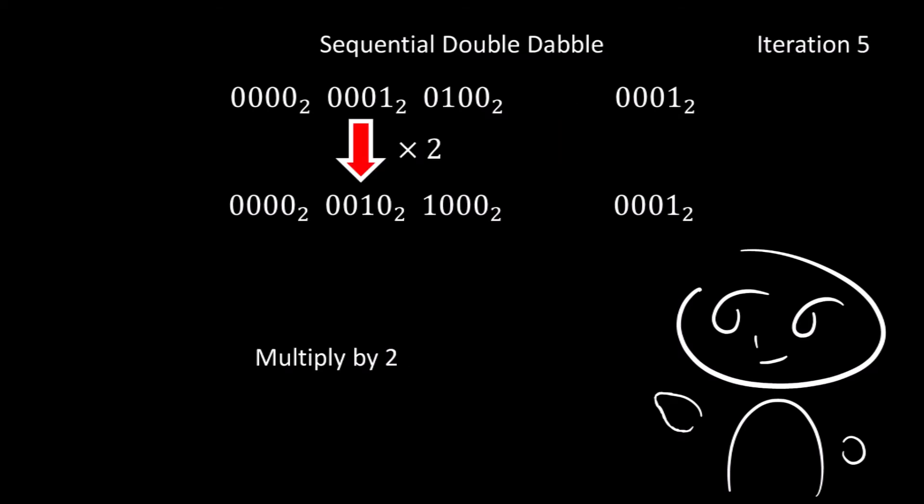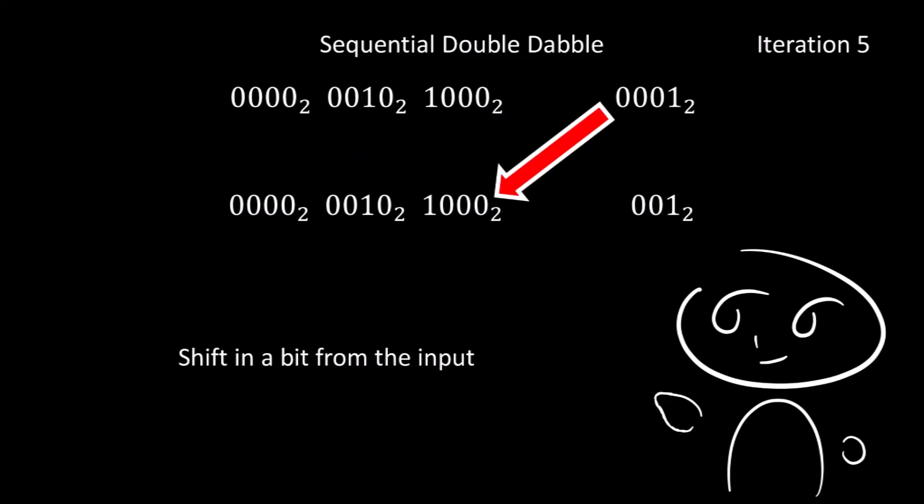For the fifth iteration, we multiply by 2. So 1 becomes 2, then 4 becomes 8. Then we shift in another bit from the input. Again, this happens to be 0, so the 8 remains as an 8.